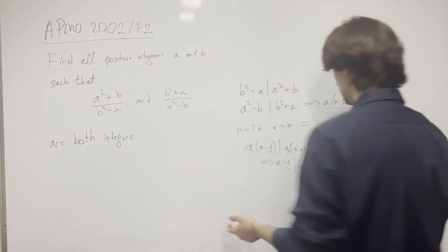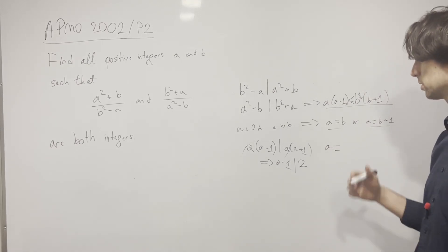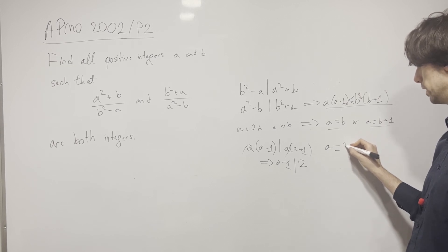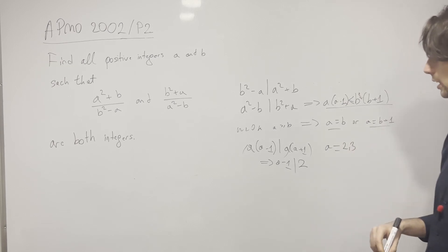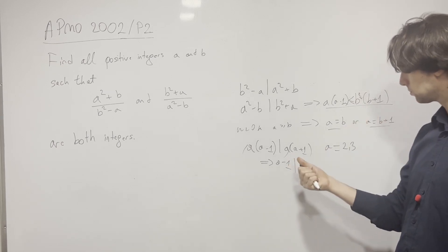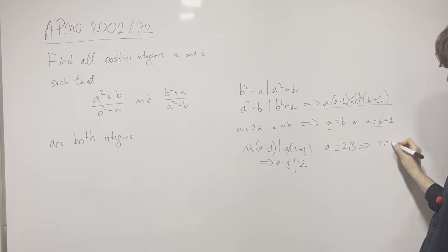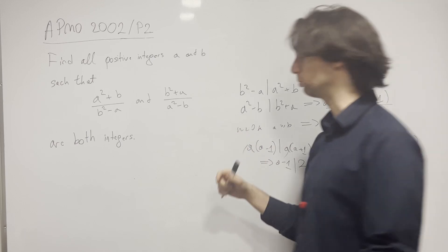This means that (a - 1) divides, when we subtract (a - 1) from this, we're going to get (a - 1) divides 2. So (a - 1) is either 1 or 2, which means a is going to be either 2 or 3. And then the solutions are (2,2) and (3,3), because a equals b here.